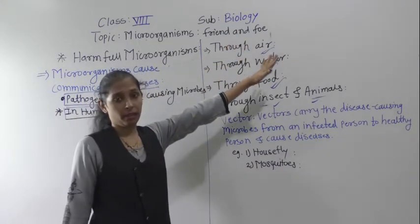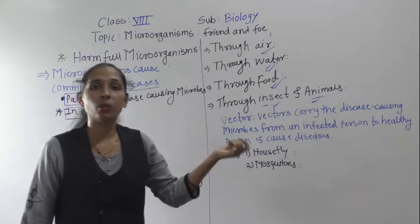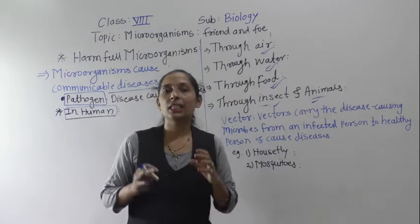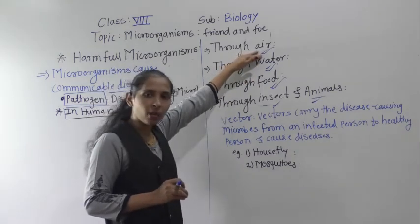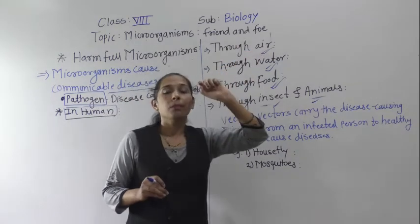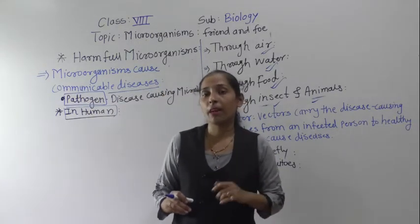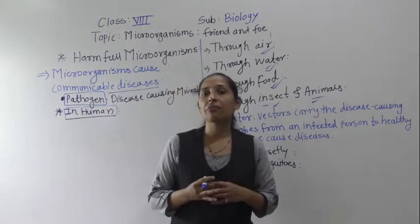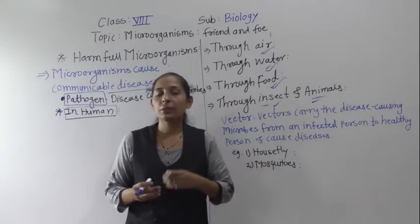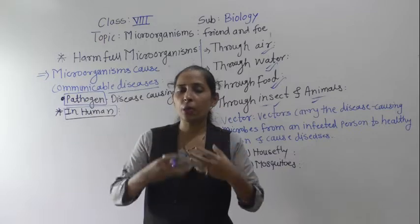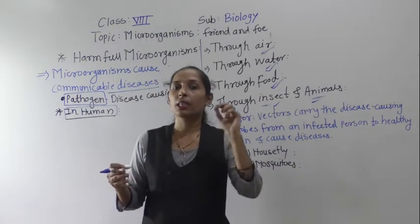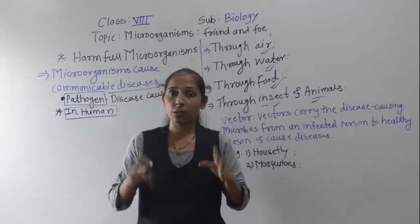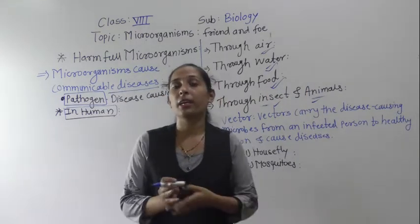The first way communicable diseases spread is through air. Diseases like common cold, pneumonia, and tuberculosis spread through the air. When an infected person sneezes or coughs, many droplets get spread in the air. The moisture in those droplets contains the germs or pathogens of these diseases, which then spread into the air.